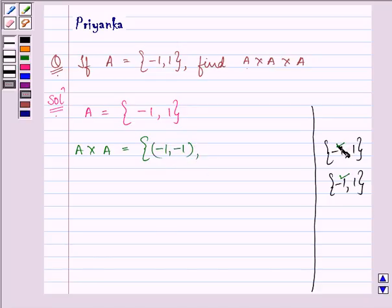Then the first element of the first set with the second element of the second set. That will be (-1, 1). Then the second element of the first with the first element of the second, and the last one will be (1, 1).